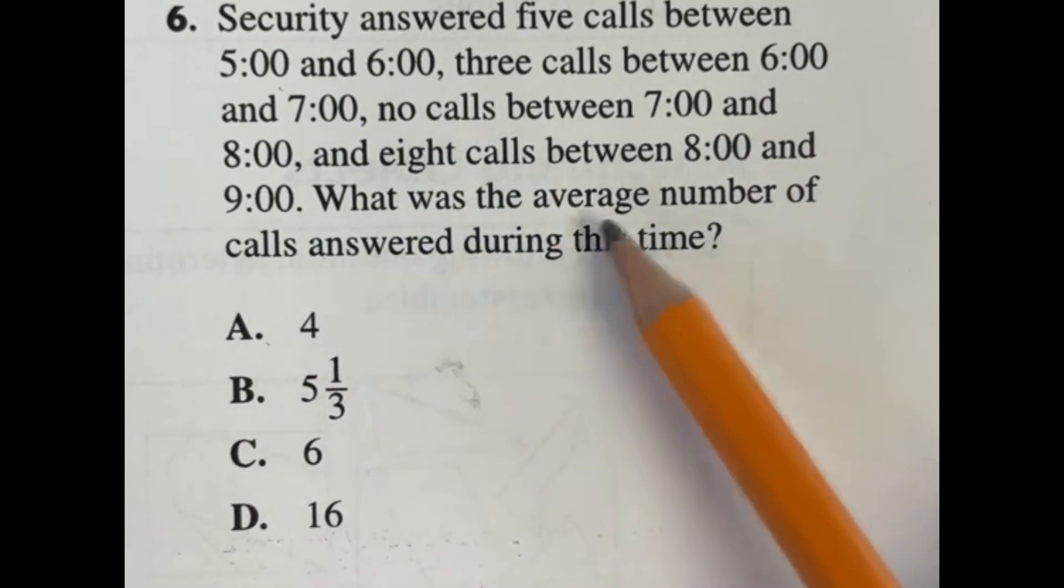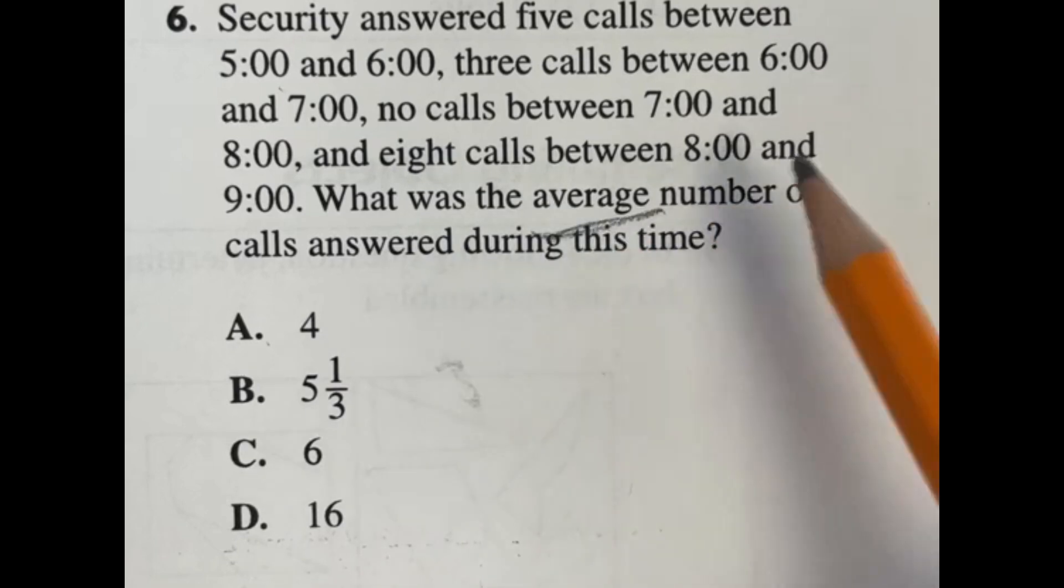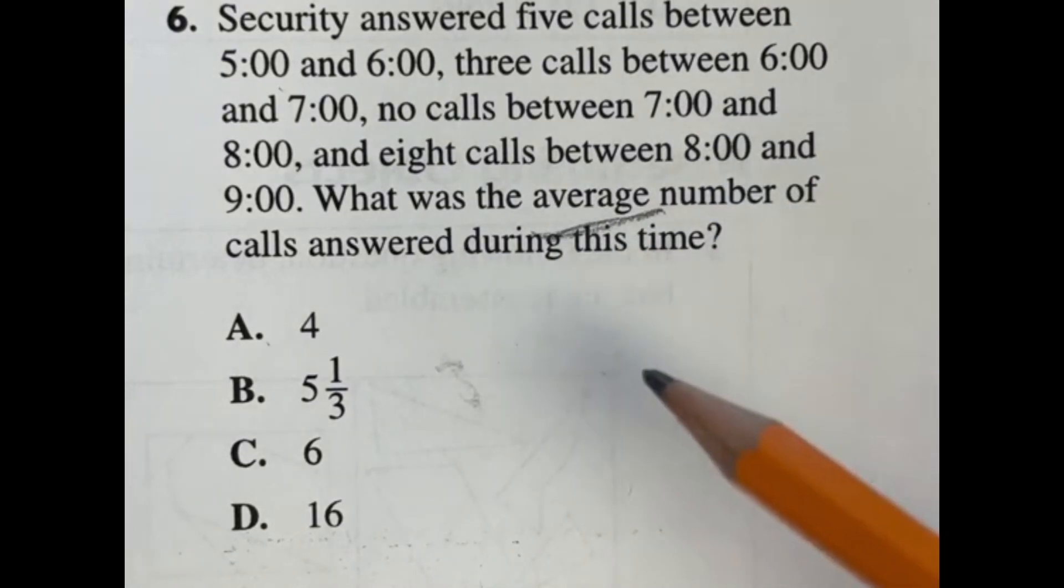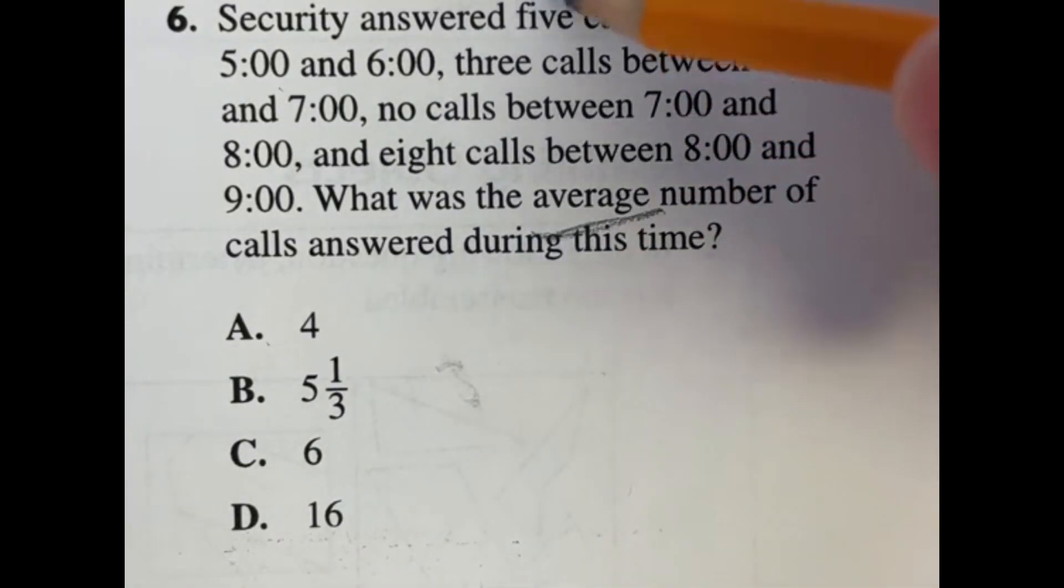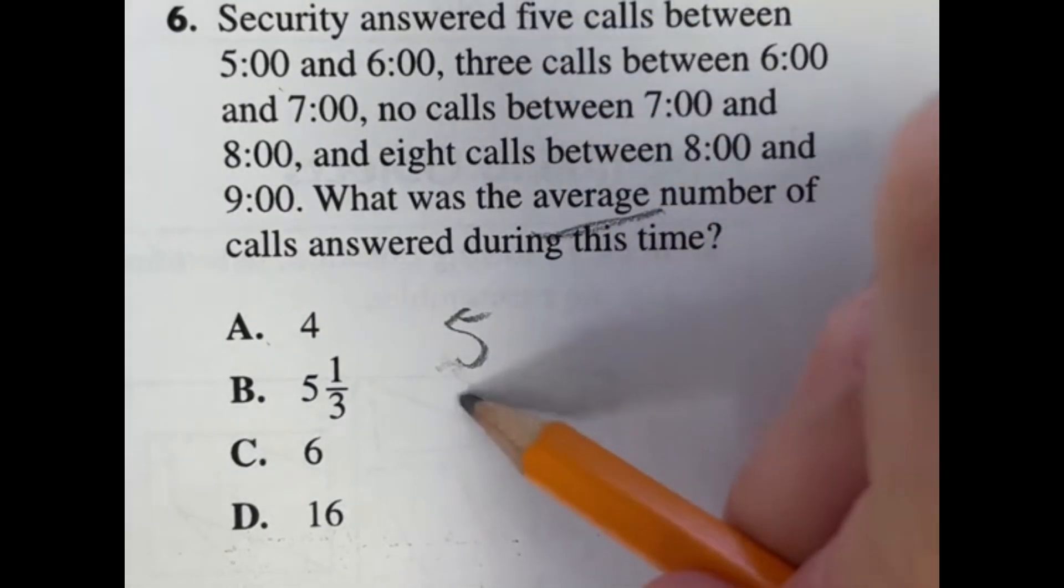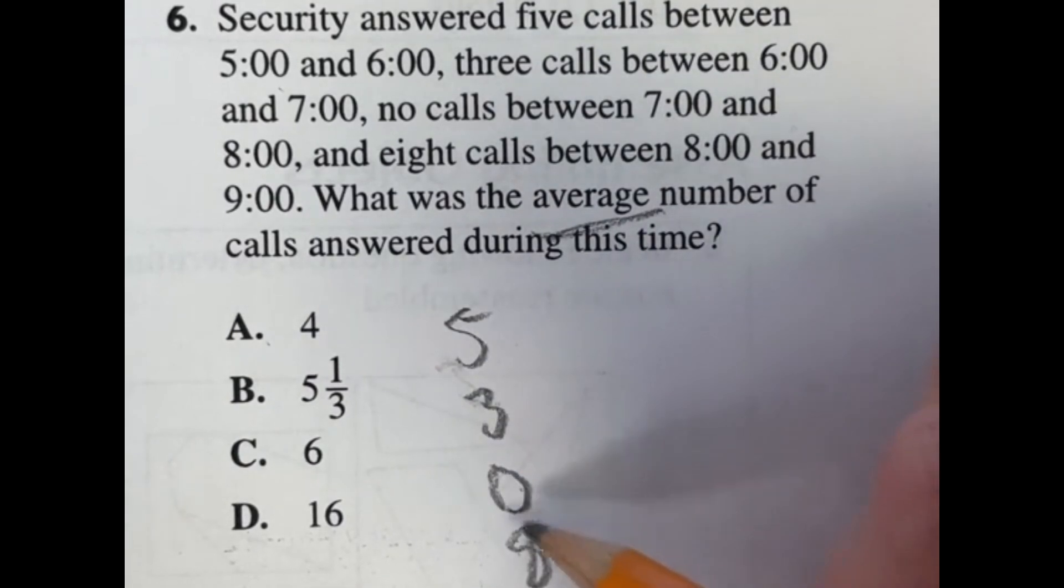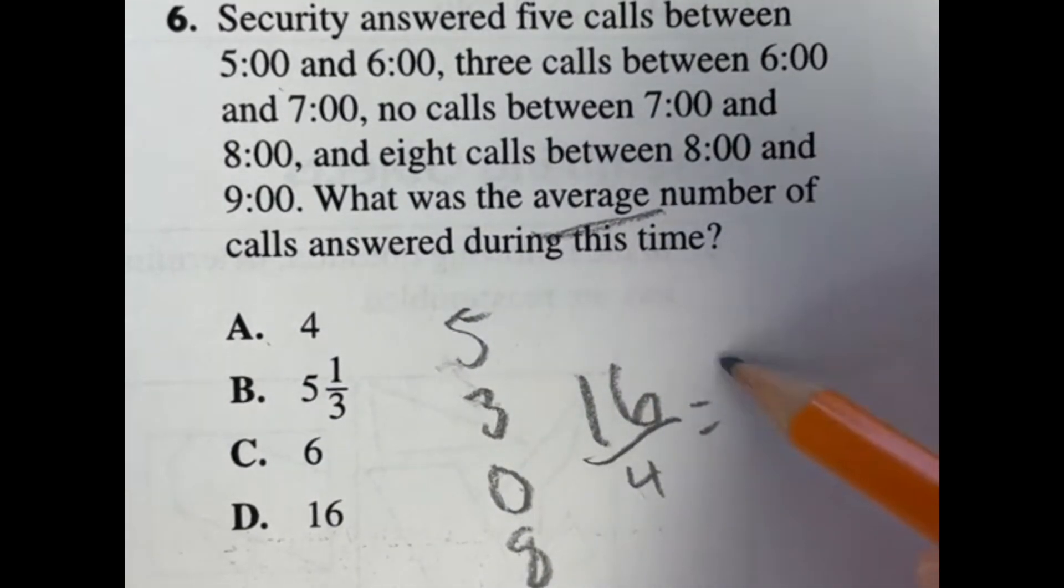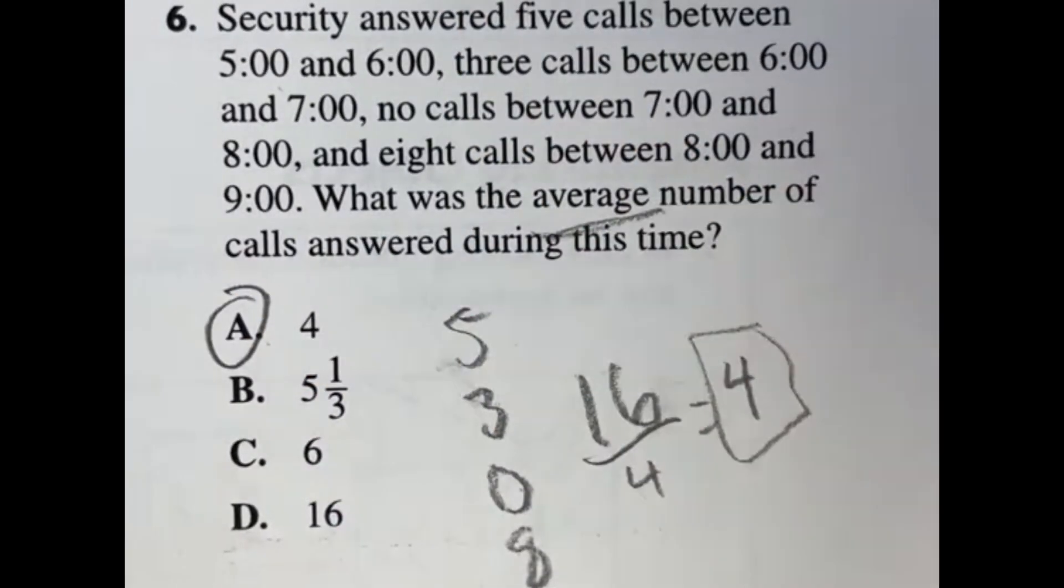So how do you find an average? Well, average is found by adding up all the numbers then dividing by how many numbers you have. So let's start off. The first one had five, the second one had three, the next one had none, and the last one had eight. If I do five plus three plus zero plus eight, that's going to give me 16. That's a total of four numbers so we're going to divide by four and that gives me four as an average. So our answer here is A.